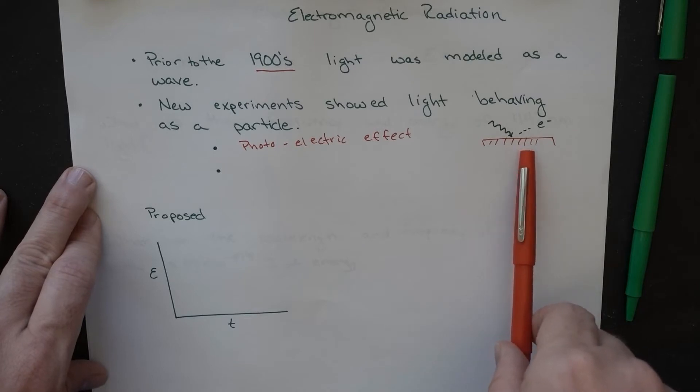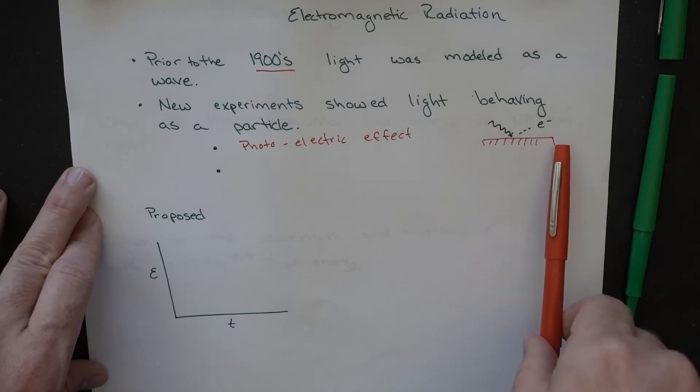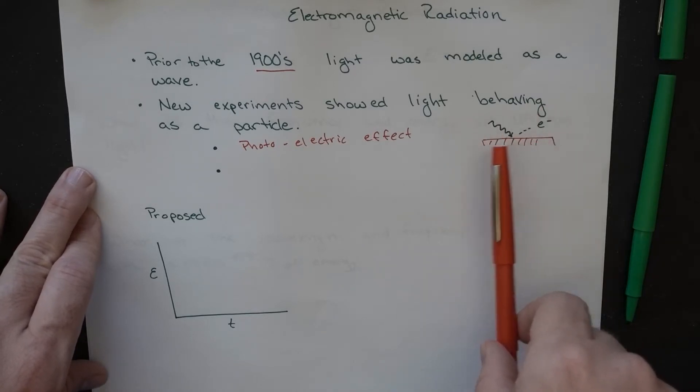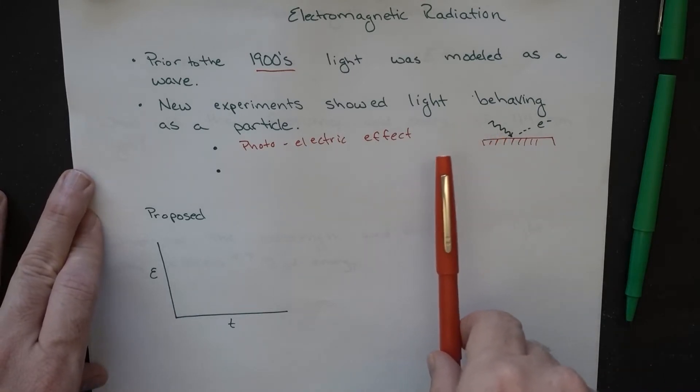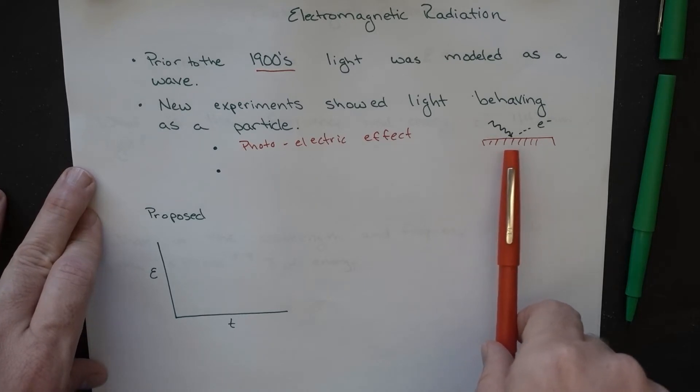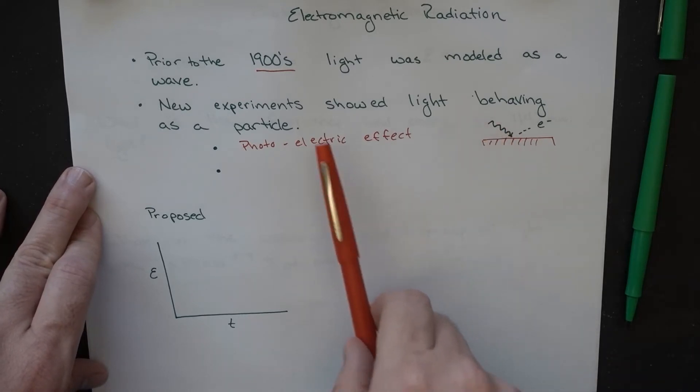That experimental result showed us that light didn't always get best modeled as a wave, and it also showed us that there were some interesting things going on in the interaction between matter and light. This is at the turn of the 20th century.